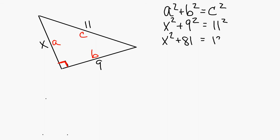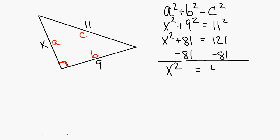This problem is a little different than the last one. When you're not finding the hypotenuse, you have to subtract in this step. You're trying to get X squared by itself, so subtract 81 from each side. X squared equals 121 minus 81, which is 40. Now square root both sides: the square root of X squared equals X, so X equals the square root of 40, which is 6.3. Round everything to the nearest tenth.